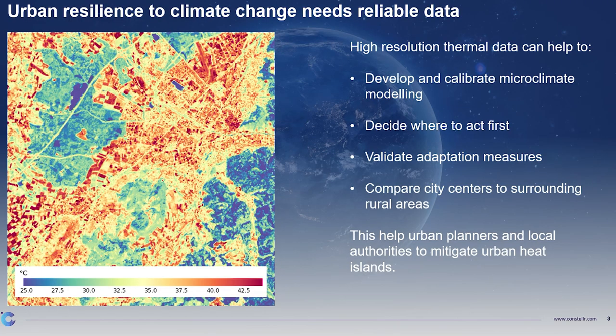We need water, and we need to validate these adaptation measures — that means we have to be able to measure the city centers, which we already measure with IoT devices, but also the surrounding areas. If you look at the thermal image here, you can see the very city center is the red dot, and you can see a lot of blue areas where we have vegetation cover like trees. Those blue areas are much cooler in land surface temperature.